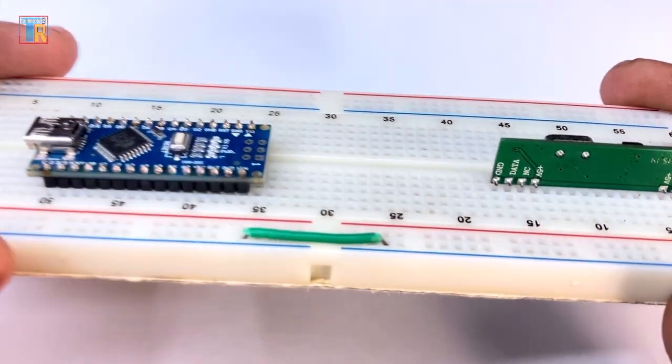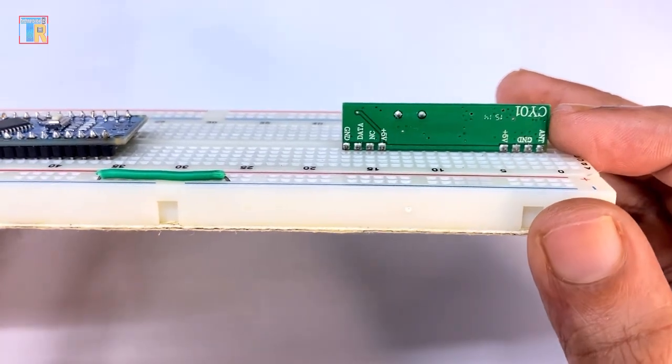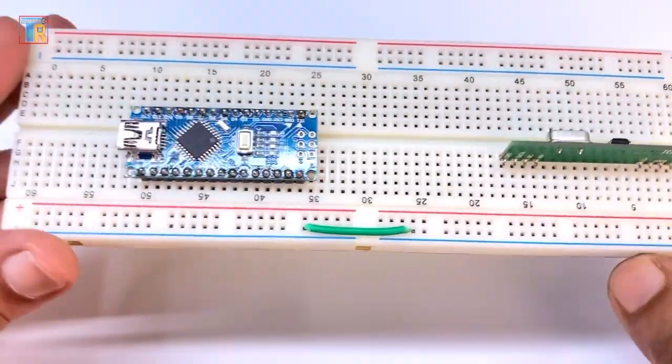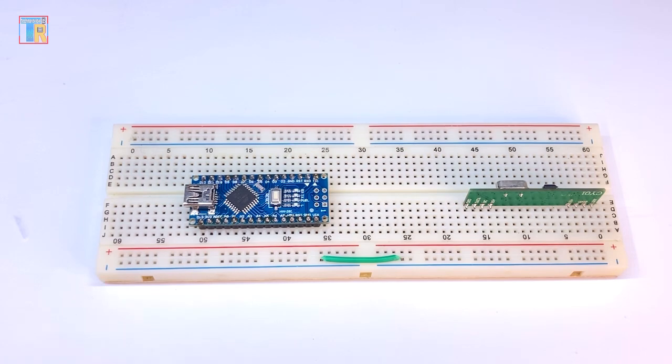At first program the Arduino using the receiver code. Here is the receiver part of 433 megahertz RF module. Connect GND to Arduino GND and 5 volt to Arduino 5 volt. Arduino D11 to RF module data pin.